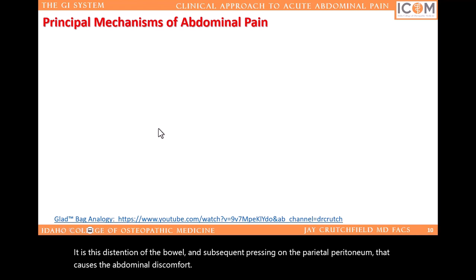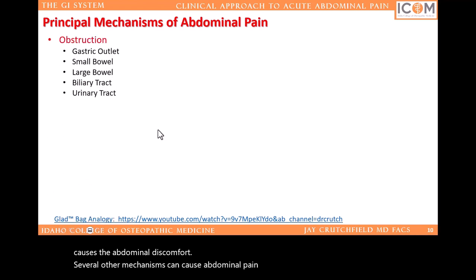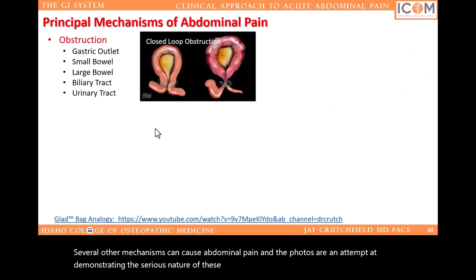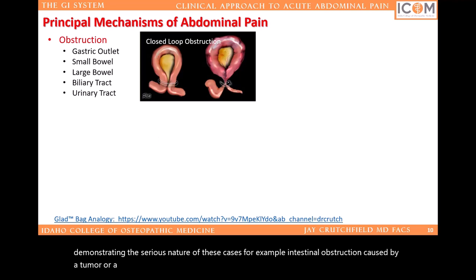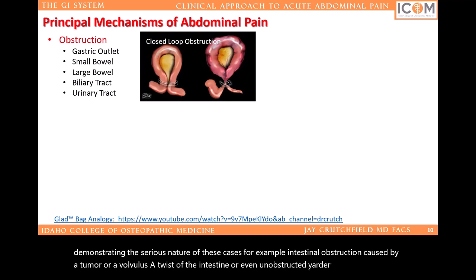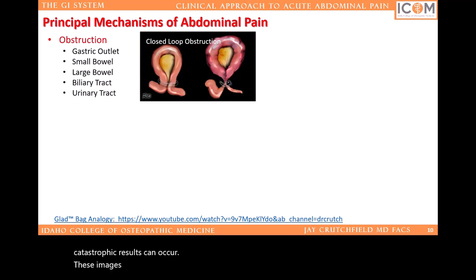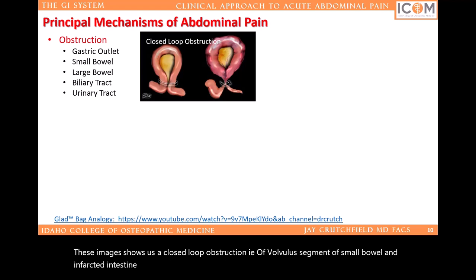Several other mechanisms can cause abdominal pain. For example, intestinal obstruction caused by a tumor or a volvulus — a twist of the intestine — or even an obstructed ureter can cause abdominal pain. When an abdominal organ loses its blood supply or has a diminished blood supply, catastrophic results can occur. These images show us a closed loop obstruction, a volvulized segment of small bowel, and infarcted intestine. Both would be surgical emergencies.